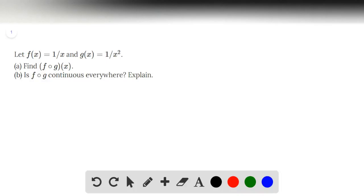This is problem number 48 of the Stewart Calculus 8th edition, section 2.5. Let f of x equal 1 over x and g of x equal 1 over x squared.